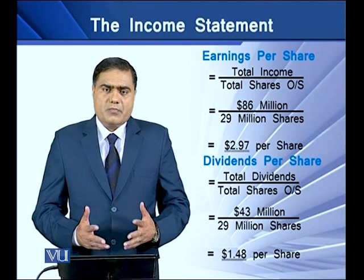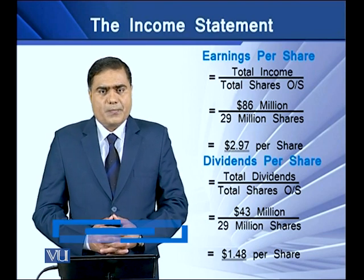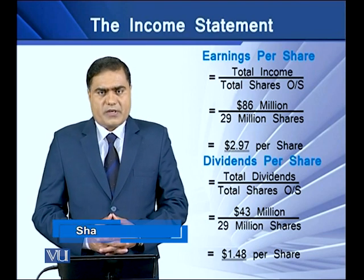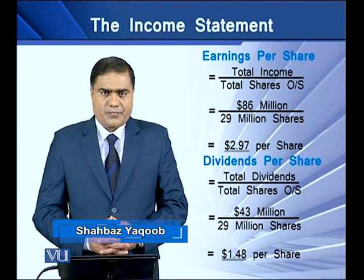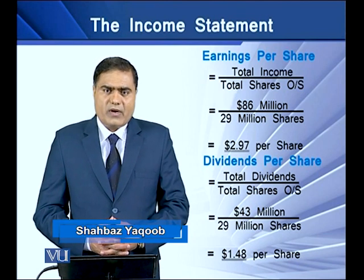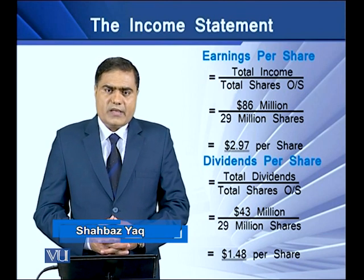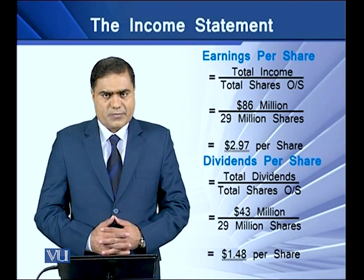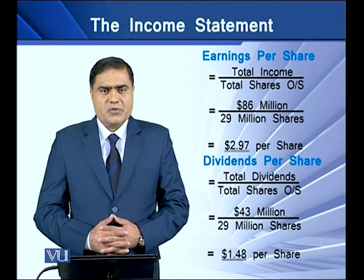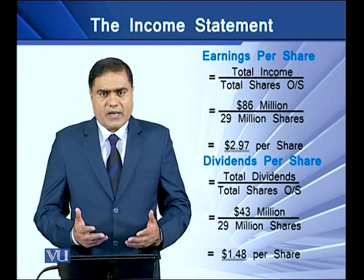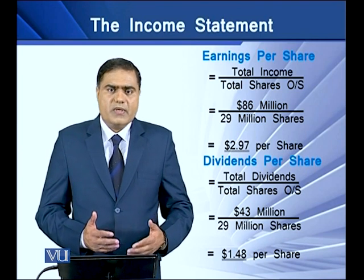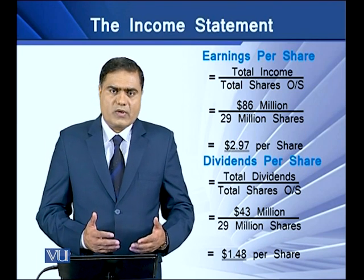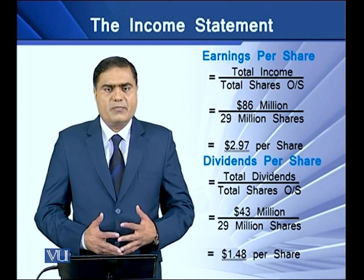Two important ratios can be derived from an income statement. The first is earnings per share, which can be computed by dividing earnings after tax by the outstanding number of shares. This ratio tells how much earning a firm has made per share over a specific period of time.